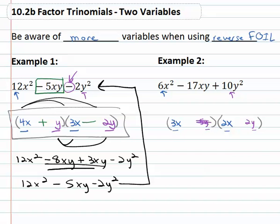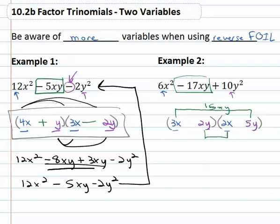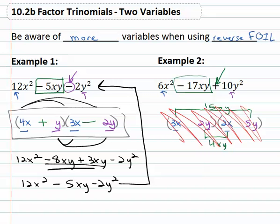So our terms must be backwards — let's make it 2y and 5y. Now we want to end up with the middle of negative 17xy. When we multiply outside times inside, 3x times 5y is 15xy and 2y times 2x is 4xy. Are those going to give us negative 17? 15 plus 4 is 19 — that doesn't work. That's okay, throw it out and we'll try something else.